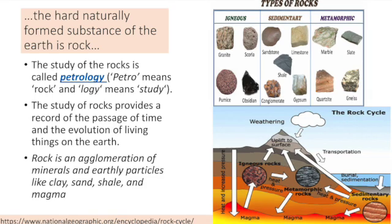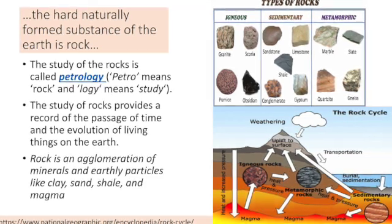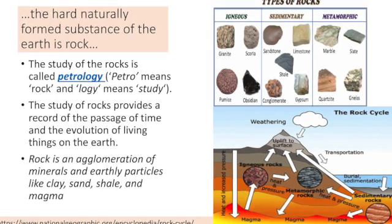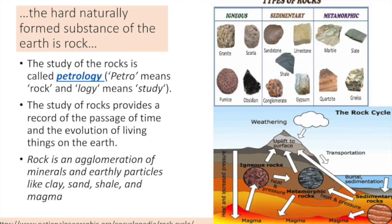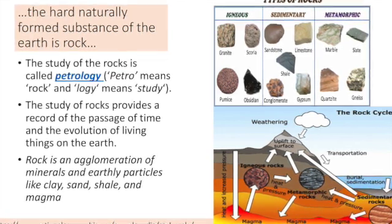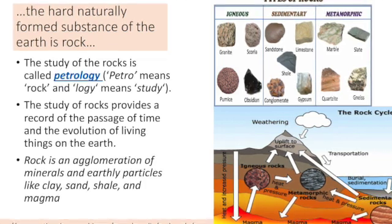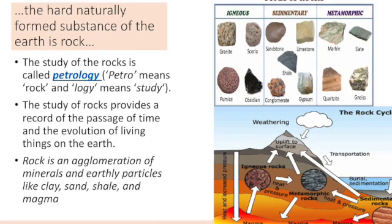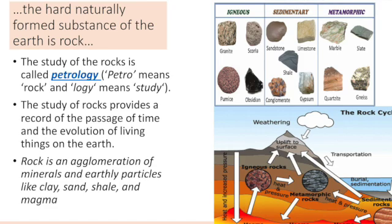Igneous rocks are made up from magma or molten rocks, and as they cool they form rocks. There are two types of igneous rocks: extrusive and intrusive. Extrusive rocks are formed on the surface of the earth from lava, which is magma that has emerged from underground. Intrusive rocks are formed from magma that cools and solidifies within the surface of the crust. Examples of igneous rock are granite, basalt, gabbro, etc.